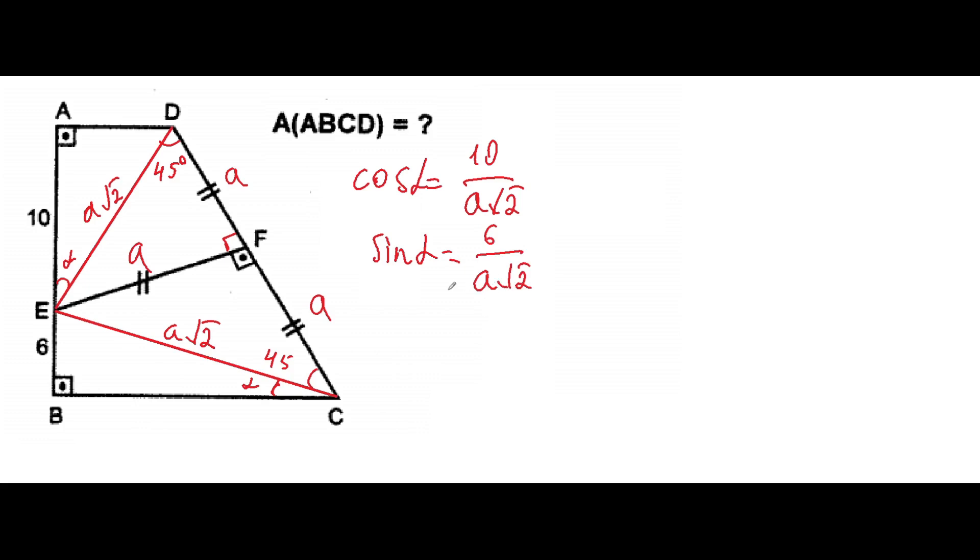And the thing that we'll use is that sin²α + cos²α is equal to 1. We can put here instead of cos α and sin α the values we found. It will be 100 over 2a² plus 36 over 2a² will be equal to 1.